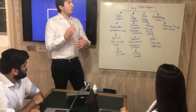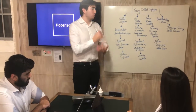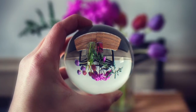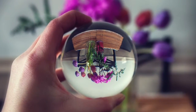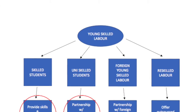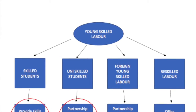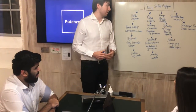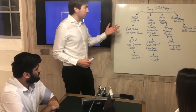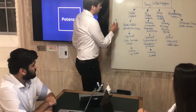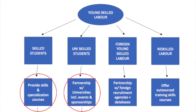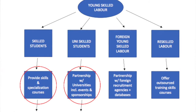Let's use the problem reversal technique to solve this problem and look at it from a different angle. Instead of starting from where we are now, let's start from the finish line — where we'll have skilled students, university-skilled students, foreign recruitment of skilled workers, and re-skilled young labor within Italy. Working backwards, the solutions we came up with were: providing skills and specialization courses throughout Italian high schools to give students the skills they need ready for the workplace.